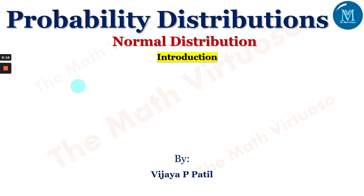The normal distribution was first discovered in 1733 by English mathematician de Moivre, who obtained this continuous distribution as a limiting case of the binomial distribution and applied it to problems arising in the game of chance. It was also known to Laplace no later than 1774, but through a historical error it was credited to Gauss, who first made reference to it at the beginning of the 19th century in 1809.